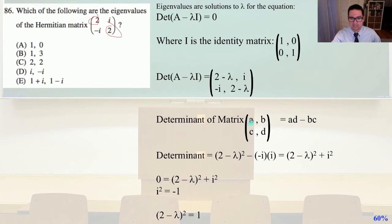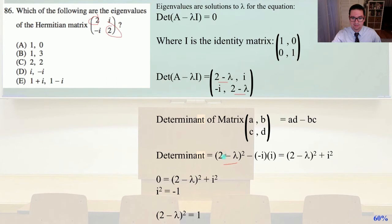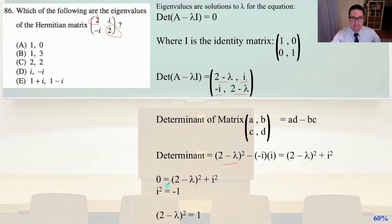We remember that the determinant of a matrix [a, b; c, d] equals ad minus bc. So the determinant equals (2 minus lambda) squared minus (i times negative i). That gives (2 minus lambda) squared plus i squared. We know i squared equals minus 1. So setting the determinant to zero: 0 equals (2 minus lambda) squared plus i squared, with i squared equal to minus 1, giving us (2 minus lambda) squared equals 1.